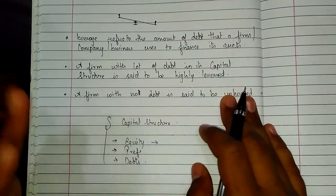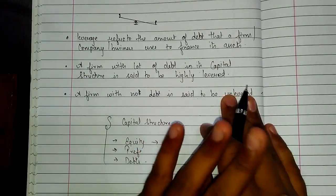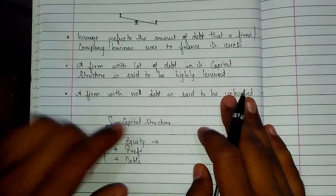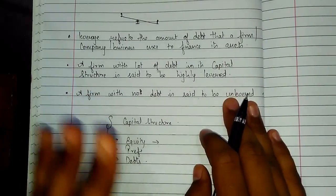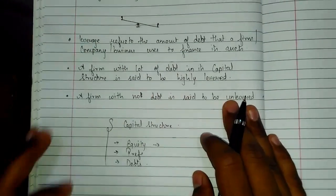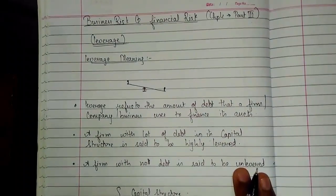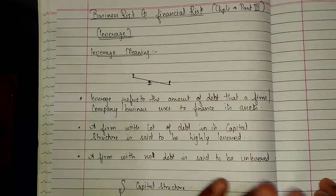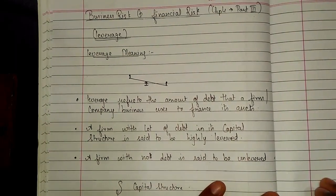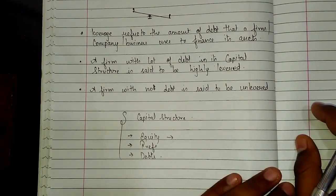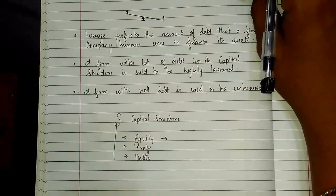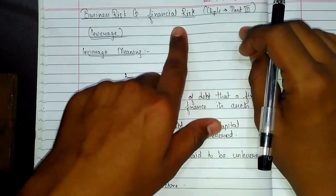So if debt is used to finance a particular asset, it gives leverage — a push — to a company in all directions, helping the company financially so it can finance its assets and move ahead rather than borrowing in the form of equity. Please pause the video and copy this much. Now let's move ahead and understand what business risk and financial risk mean.